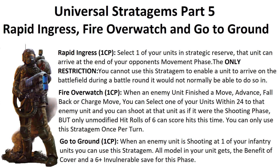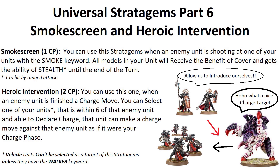Go to Ground, for one command point: when your opponent shoots at one of your infantry units, that unit gains the benefit of cover plus a 6+ invulnerable save — even if standing in open ground. Smokescreen, for one command point: use it when an enemy shoots at a unit with the smoke keyword — that unit gains cover and the Stealth ability, giving a better armor save until end of phase and forcing enemies to subtract one from hit rolls.